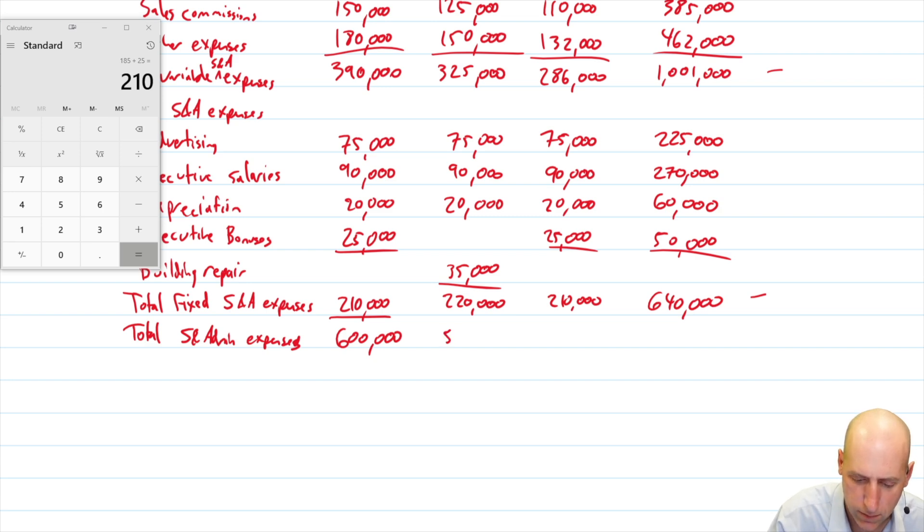220 plus 325. That's 545. 210 plus 286. That's 496. And adding this across. Well, I guess I'll do it this way. 1001 plus 640 is 1641.